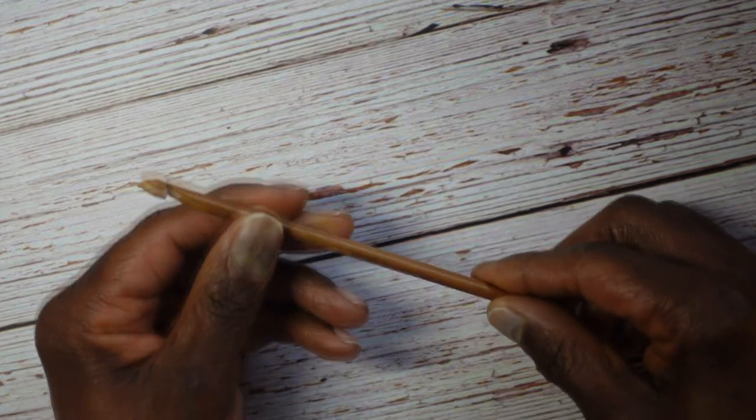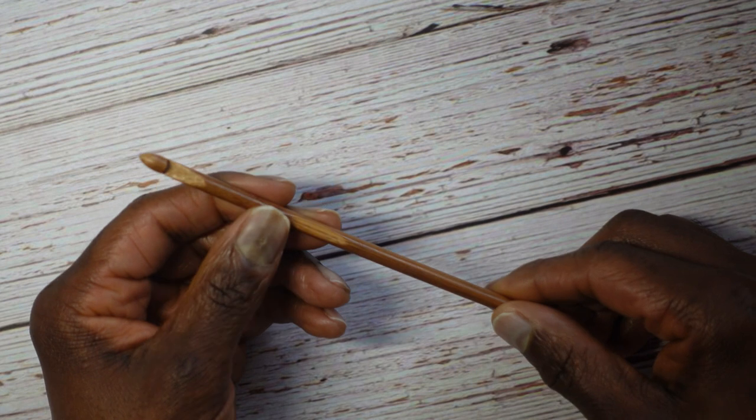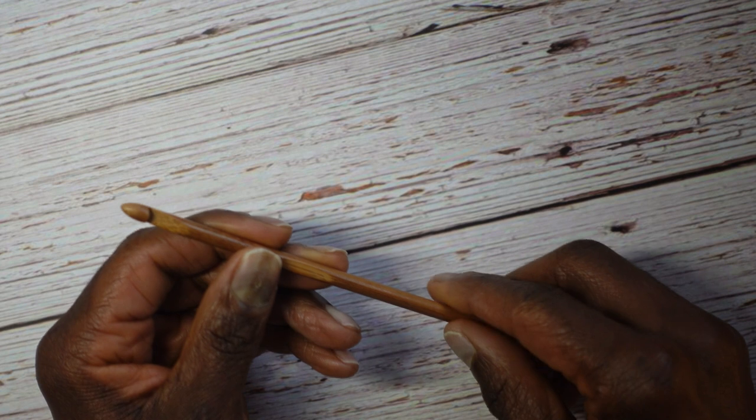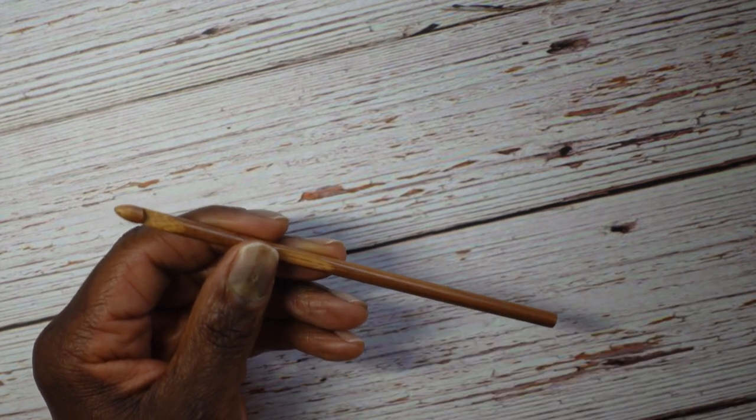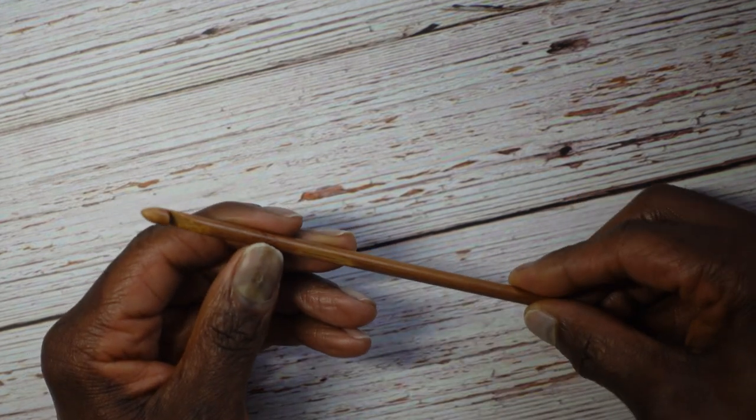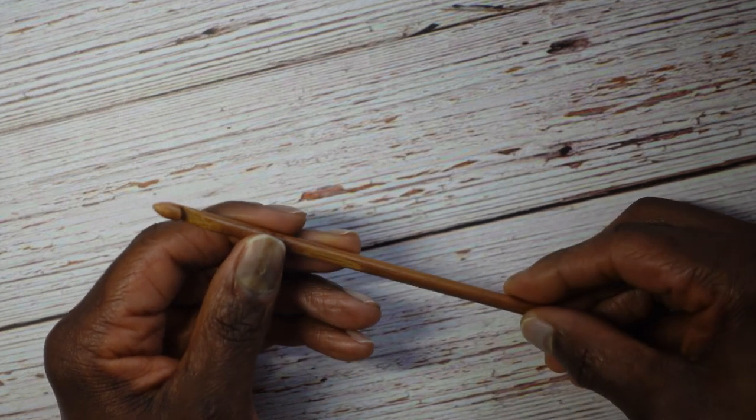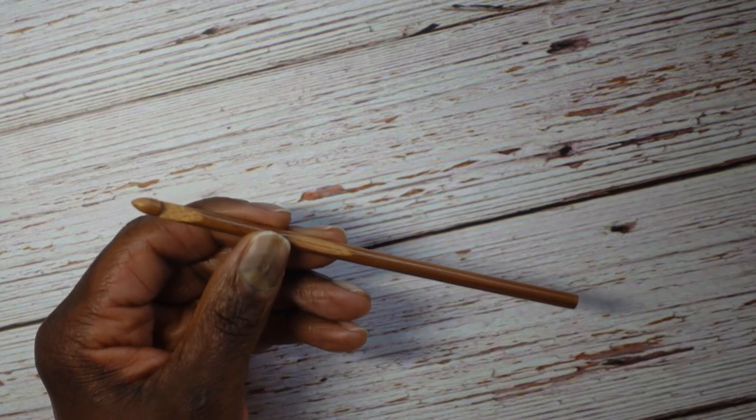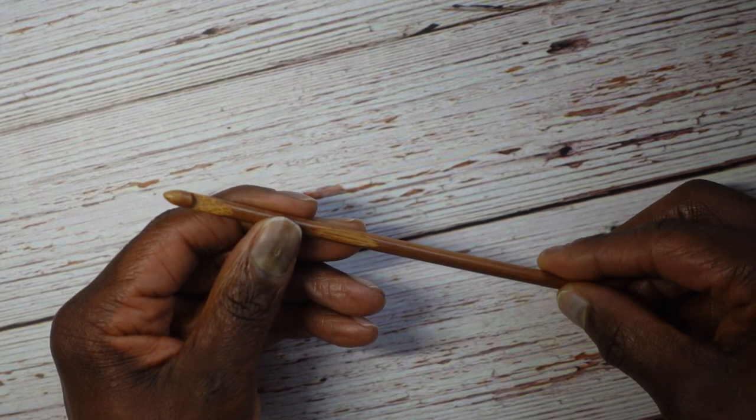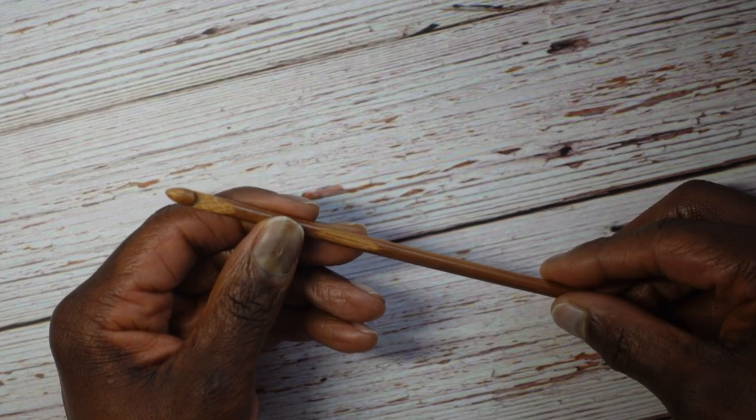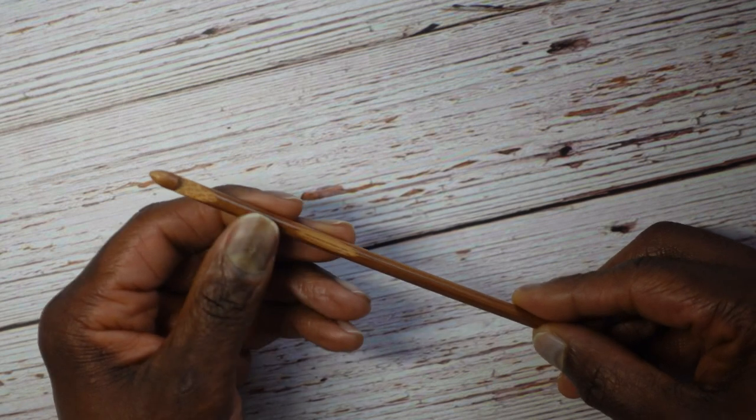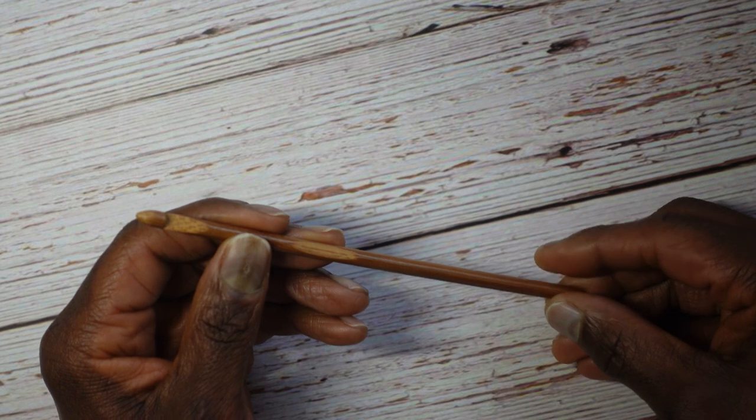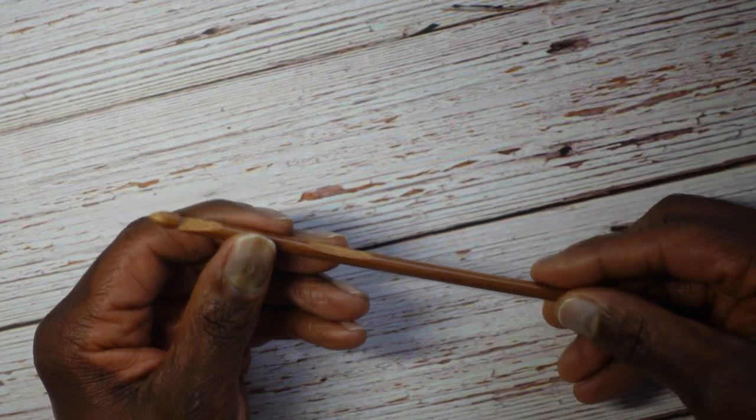Also the good thing about bamboo hooks is that they do become smoother with time. So the more you use them, the smoother they become. Say you buy a set as a beginner, it gives you what you need while you're learning and developing your skills because of the friction that's present. But then as you use them more and more, they smoothen out. But of course, as you've been using them more and more, you're gaining more experience and you are able to better handle a surface with less friction. So they kind of mature as you mature, which I think is a beautiful sentiment.